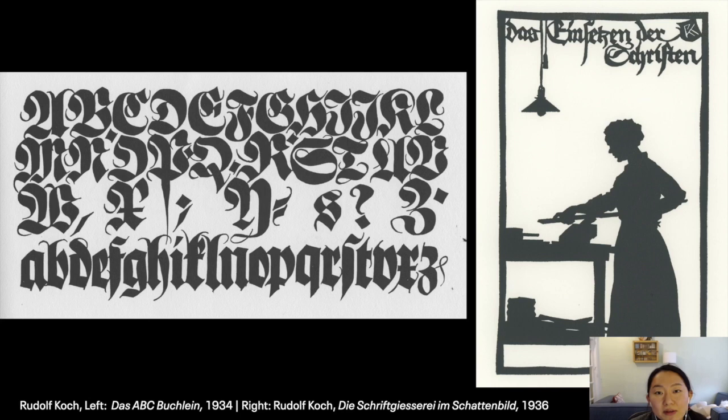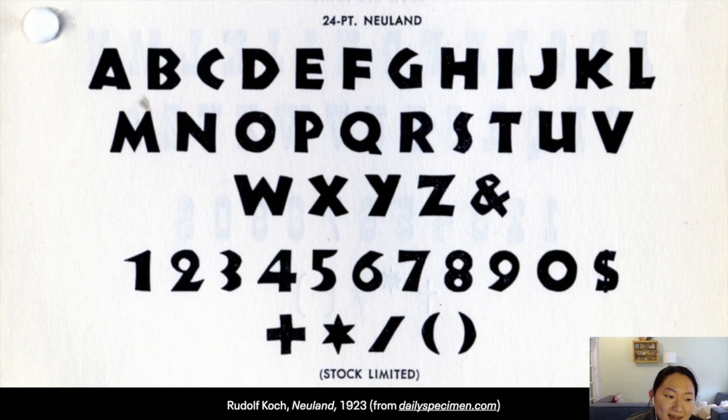His very famous roster of students includes Berthold Wolpe and Warren Chappell — a lot of figures he influenced went on to have very illustrious careers of their own. Another side story is that he also made Neuland because he wanted a blackletter that had a Roman style, and it's later being used for logos like The Lion King or Jurassic Park — things that might not have to do with German values, so to speak.